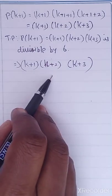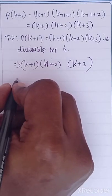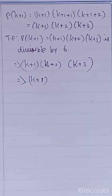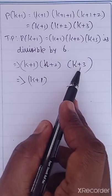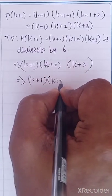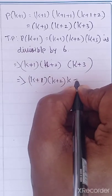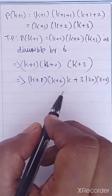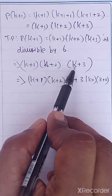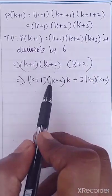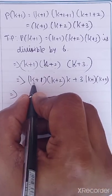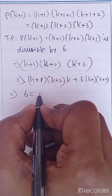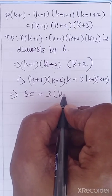We are considering the term K plus 1 into K plus 2 into K plus 3. We can split K plus 3 as K plus 3, rewriting as K plus 1 into K plus 2 into K, plus 3 into K plus 1 into K plus 2. So we get K into K plus 1 into K plus 2, which equals 6C, plus 3 into K plus 1 into K plus 2.